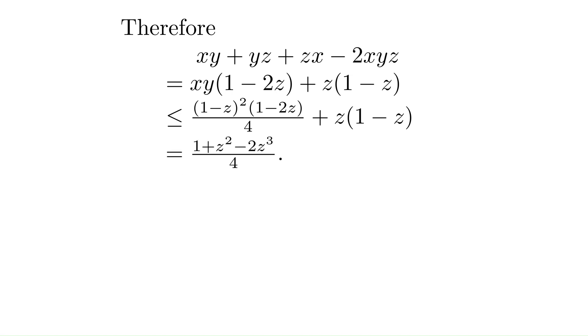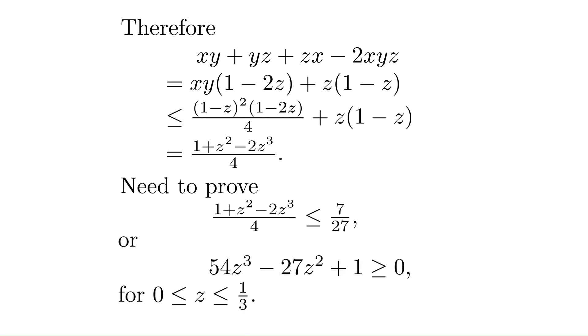And to simplify it, we get an expression that is actually a cubic polynomial in z. What we need is that this cubic polynomial is less than or equal to 7 over 27. Using cross multiplication, we want to prove that 54z cubed minus 27z squared plus 1 is greater than or equal to 0 for z between 0 and one third.